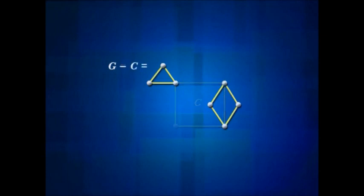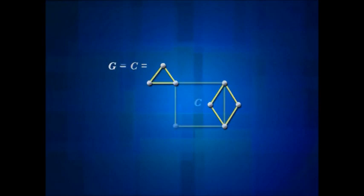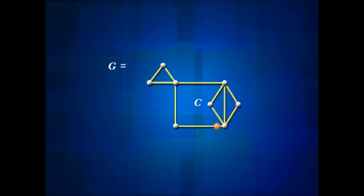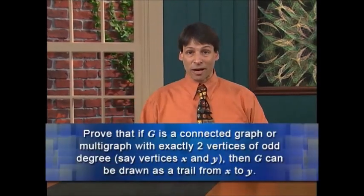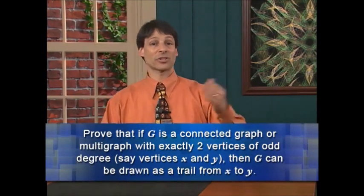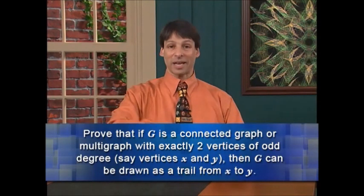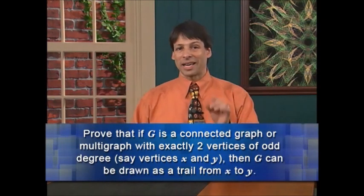If G minus C is not connected, then by the induction hypothesis each of its connected components — which have fewer edges than G — is itself Eulerian. Since G is connected, each component of G minus C must make contact with C somewhere. So we go around cycle C, and any time we reach a new connected component, we tour that entire component before continuing around C. As an exercise: if G is a connected graph or multigraph with exactly two vertices of odd degree, x and y, then G can be drawn as a trail from x to y. Hint: insert an edge from x to y and apply the previous theorem.